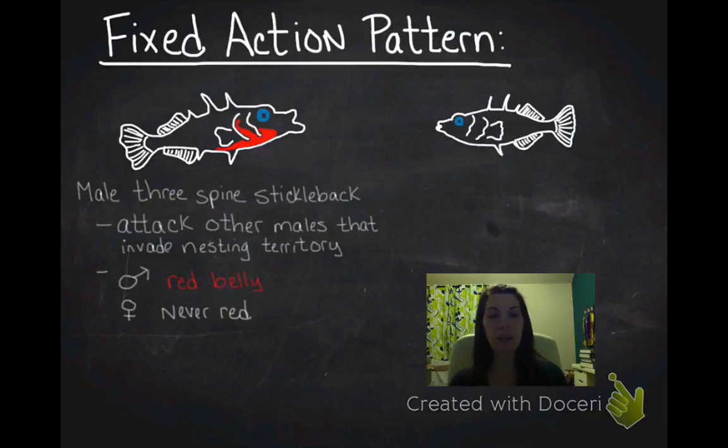So, they set up an experiment to test this. And they took a decoy. So, that's not a real fish. That's a decoy fish. But it looks like a real fish. But it doesn't have the red belly. And so, when they presented this decoy to the male fish, what they found was it does not attack that decoy. However, when they present that same decoy with a painted red belly, it does attack.